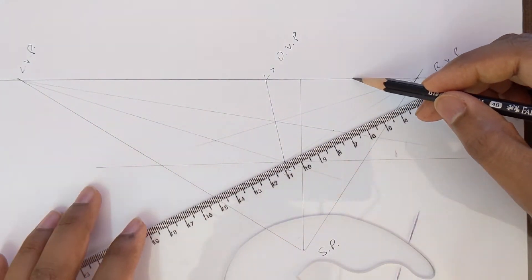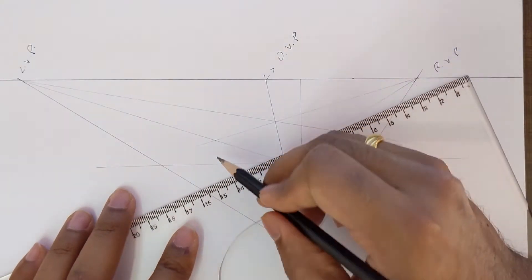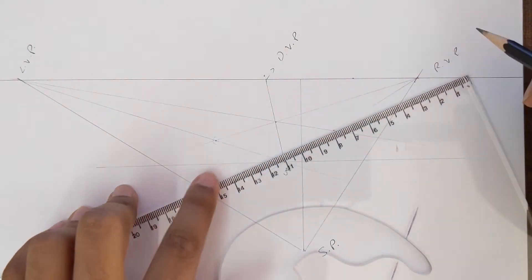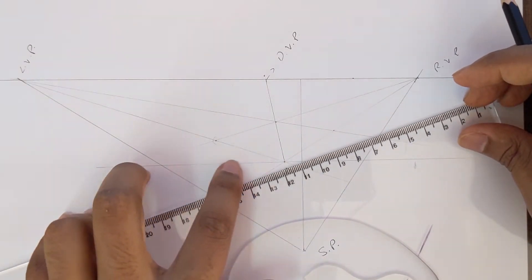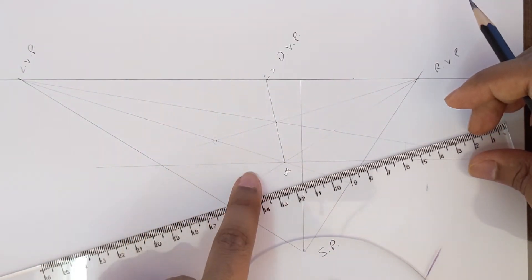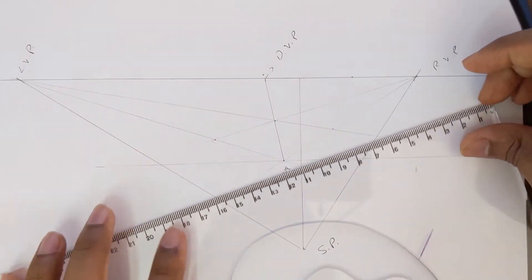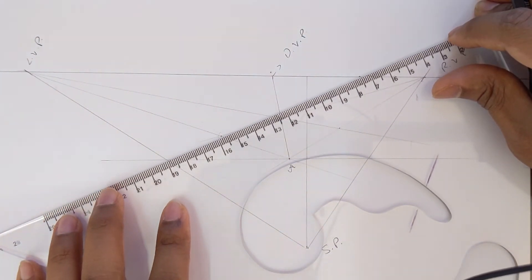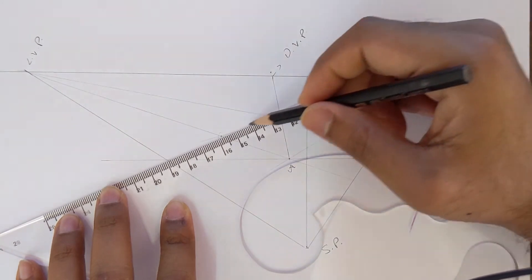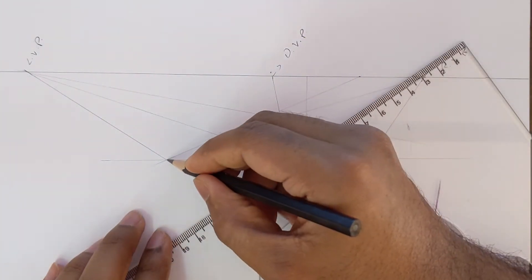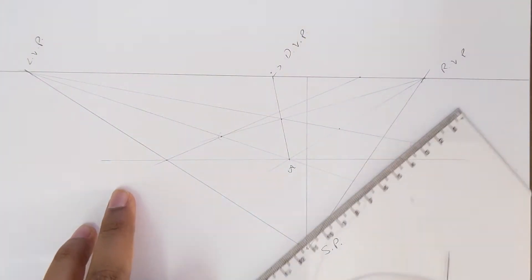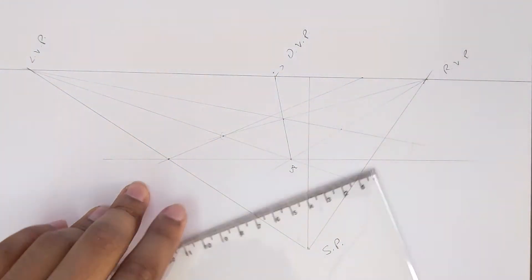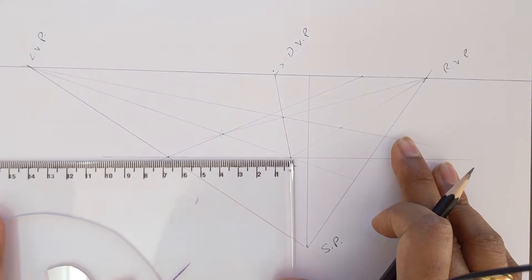Now from this point, this new point, draw a line which passes through this leftmost edge of a square and touches the horizontal line which we have drawn. So let's go ahead and do this. Yes, now we have this.